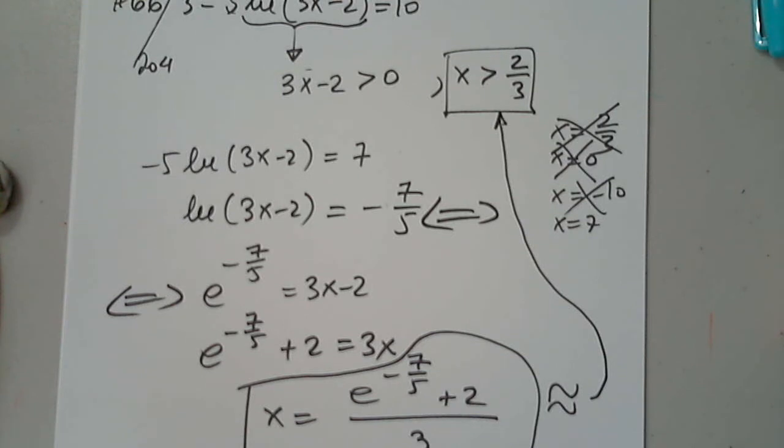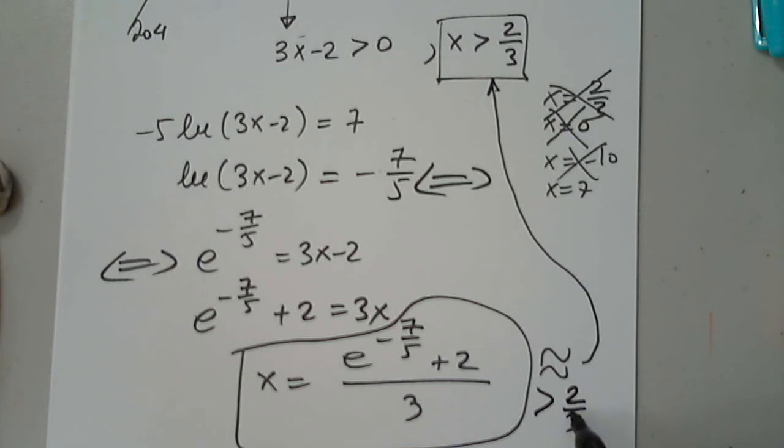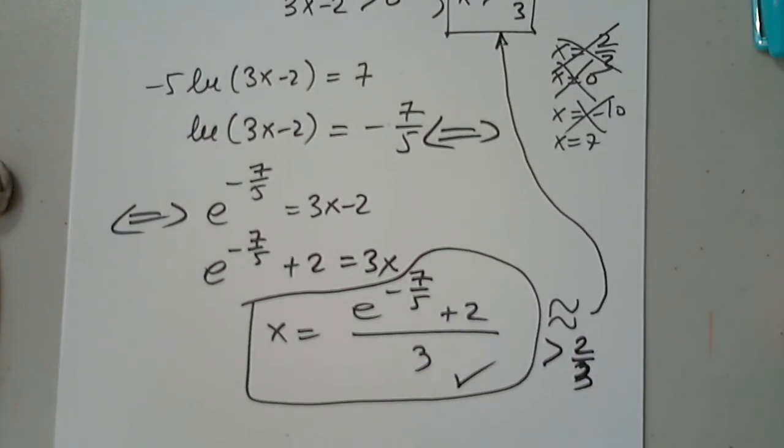So do not forget parentheses. The numerator has to be in parentheses. E, okay, negative seven-fifths, close, come back down from there, plus 2, and divide by 3. And of course this has to be greater than 2 thirds. It's absolutely clear, because e to negative seven-fifths is a positive number. Tiny positive number. So we accept the solution. We accept the solution as being greater than 2 thirds. Accept it.